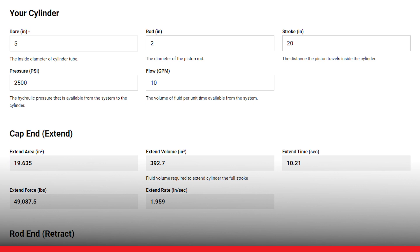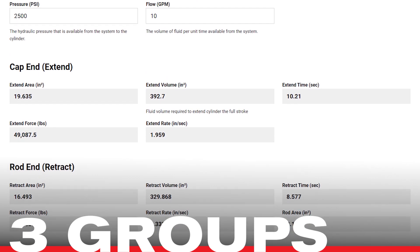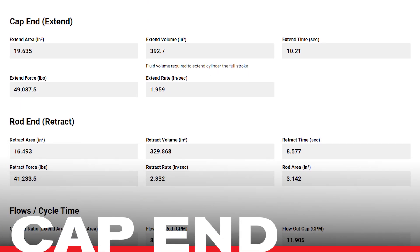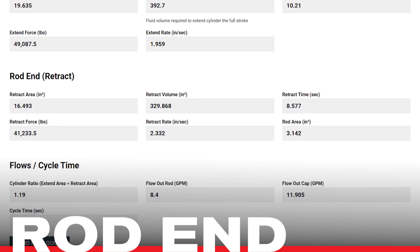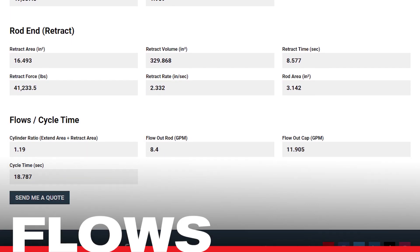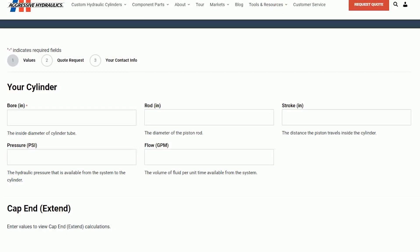The results of the calculations are organized into three groups: cap end or extend, rod end or retract, and flows and cycle times. As soon as values are entered into the Your Cylinder section, the calculated values immediately populate or update.